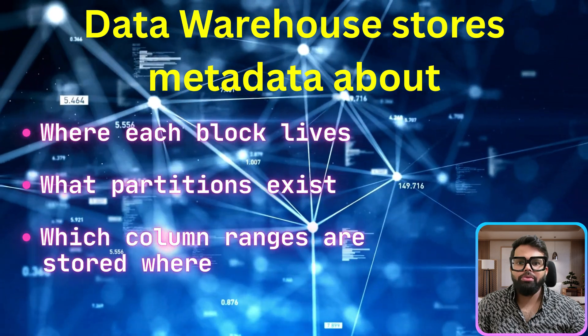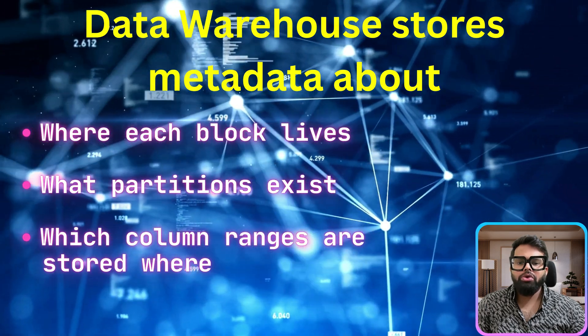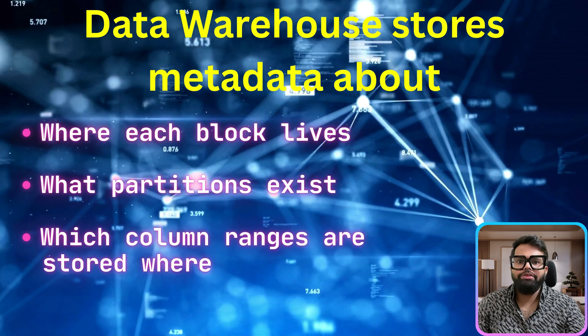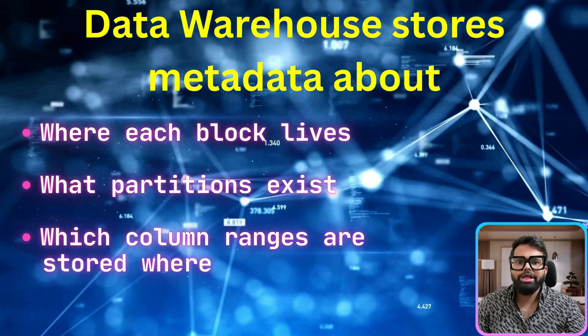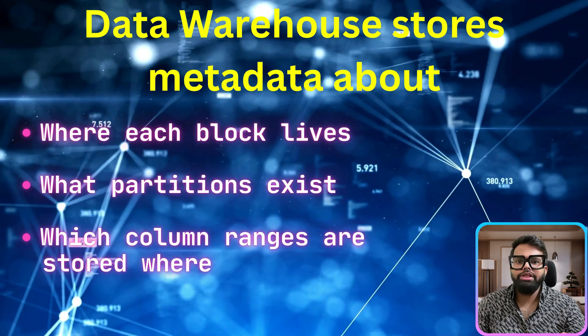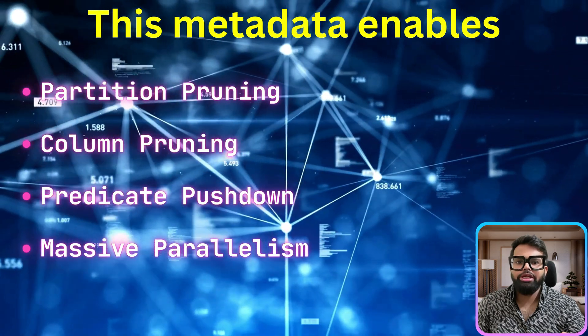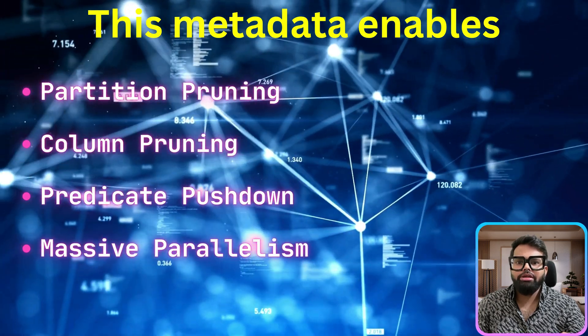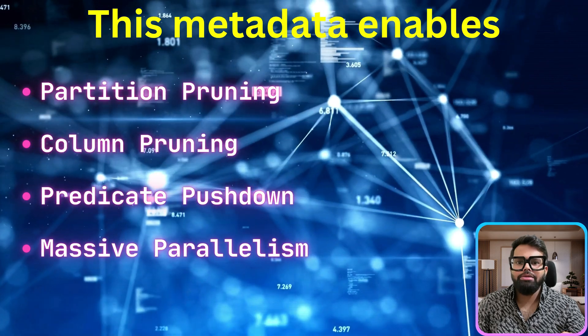Finally, the data warehouse stores metadata about where each block lives, what partitions exist, and which column ranges are stored where. This metadata enables partition pruning, column pruning, predicate pushdown, and massive parallelism — all under the hood. That's the power of a modern distributed data warehouse: it's not just about storing data, it's about smart storage, efficient compute, and ultra-fast queries all working together invisibly.